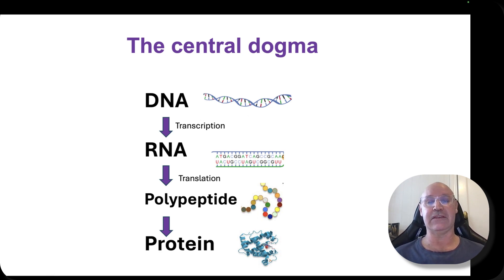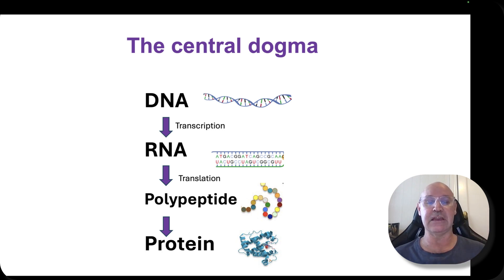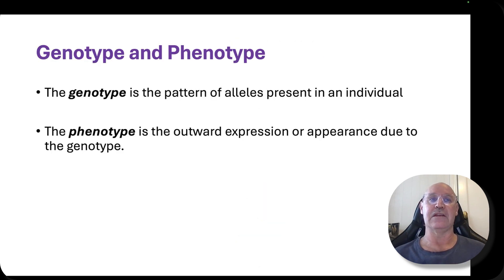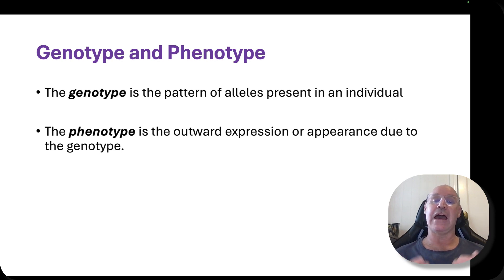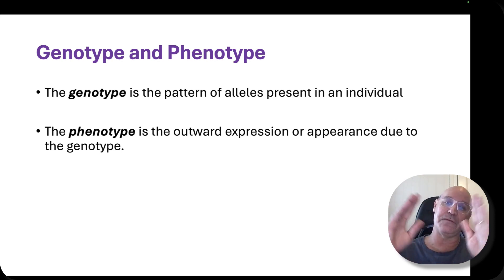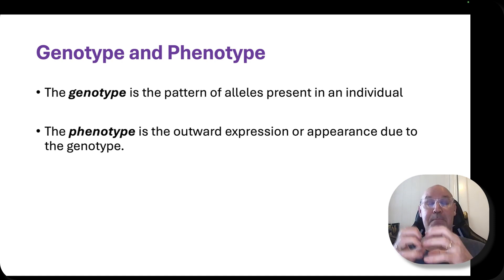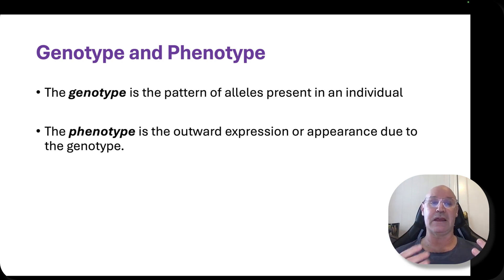What we're talking about today is transcription and translation — the processes in which the genetic code of a gene is translated into a protein. A little bit of terminology: the genotype is the pattern of alleles present in an individual, and that is expressed as the phenotype — the outward expression or appearance due to the genotype. The actual sequence of the gene dictates the amino acid sequence, which dictates the structure and function of proteins, and we're all made of proteins.